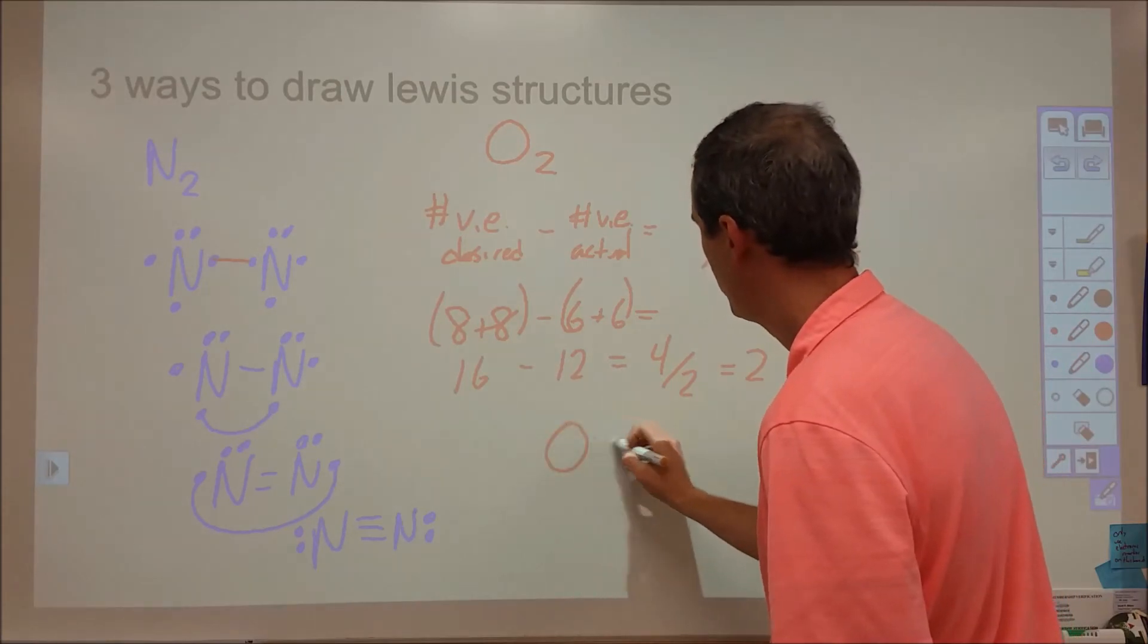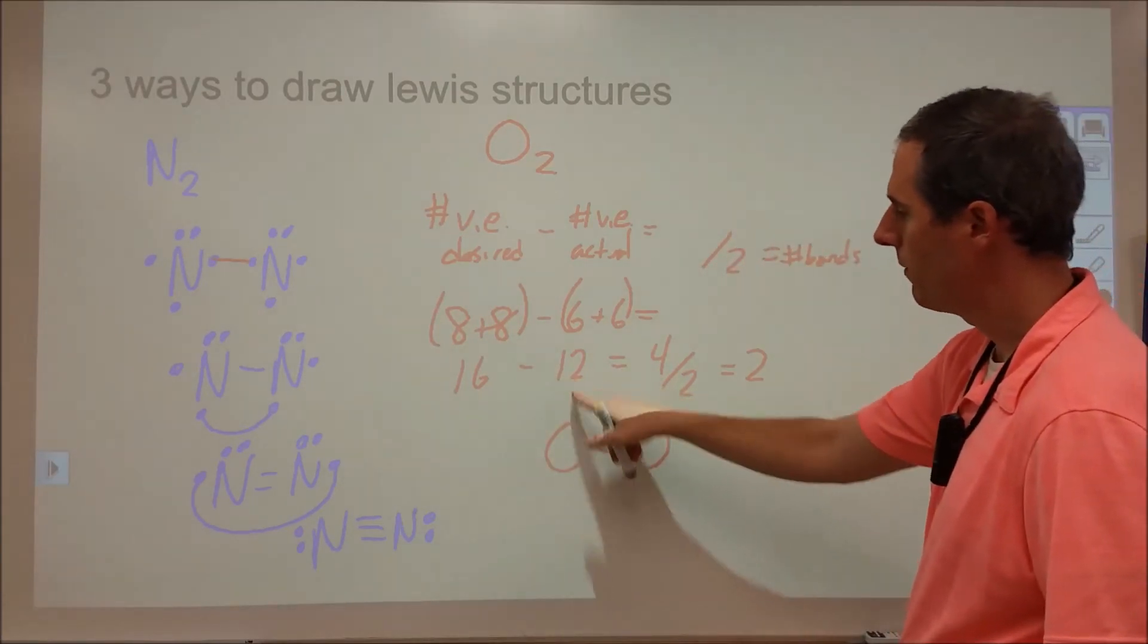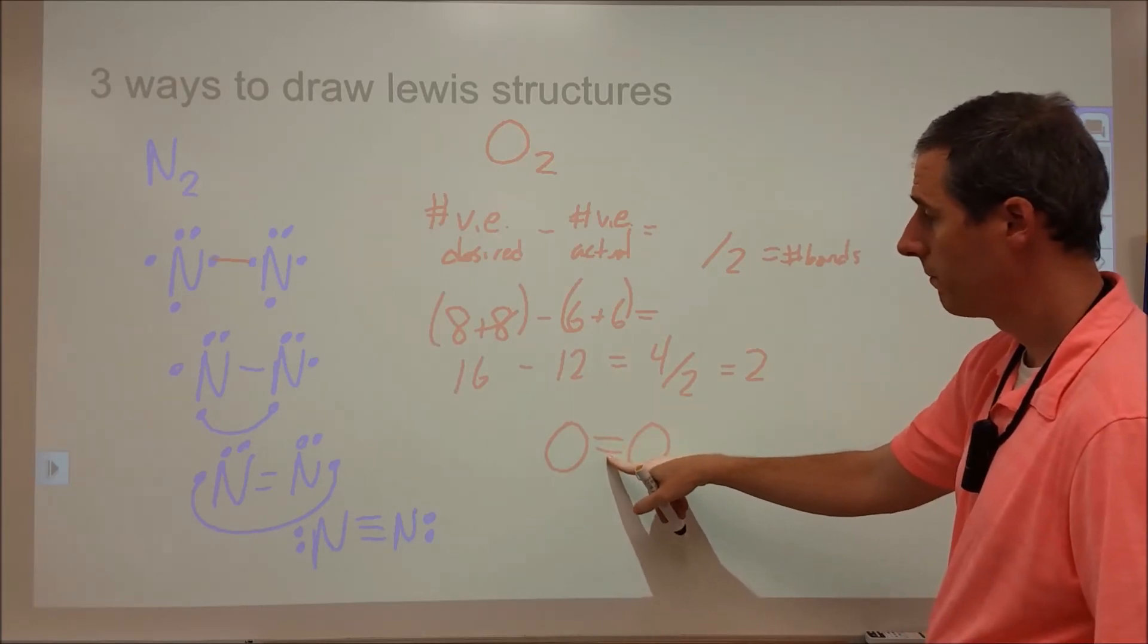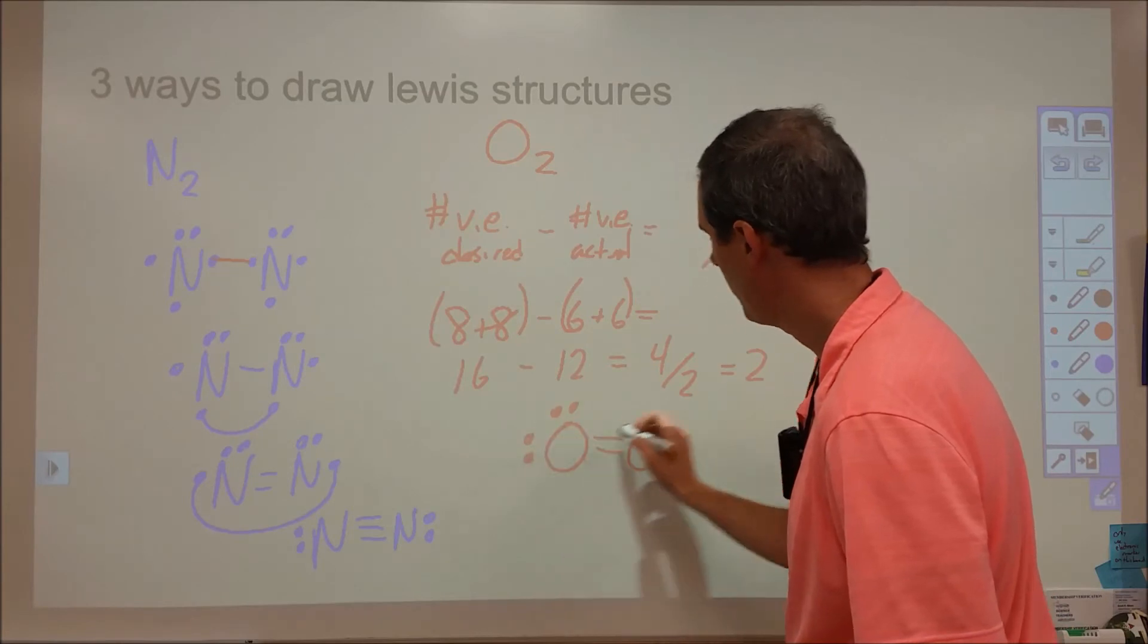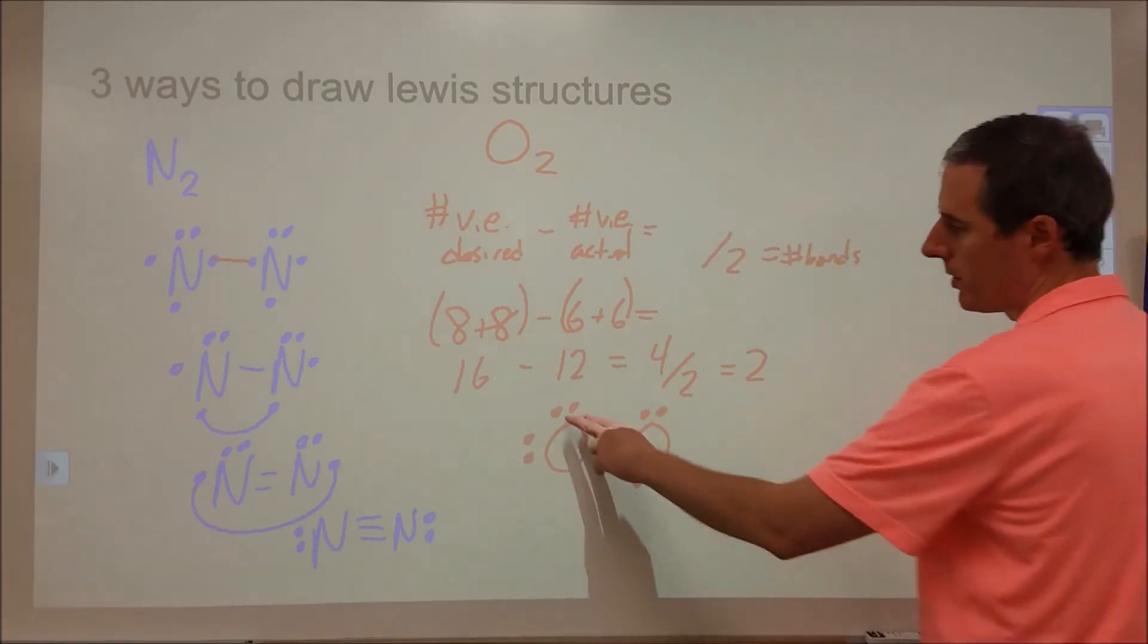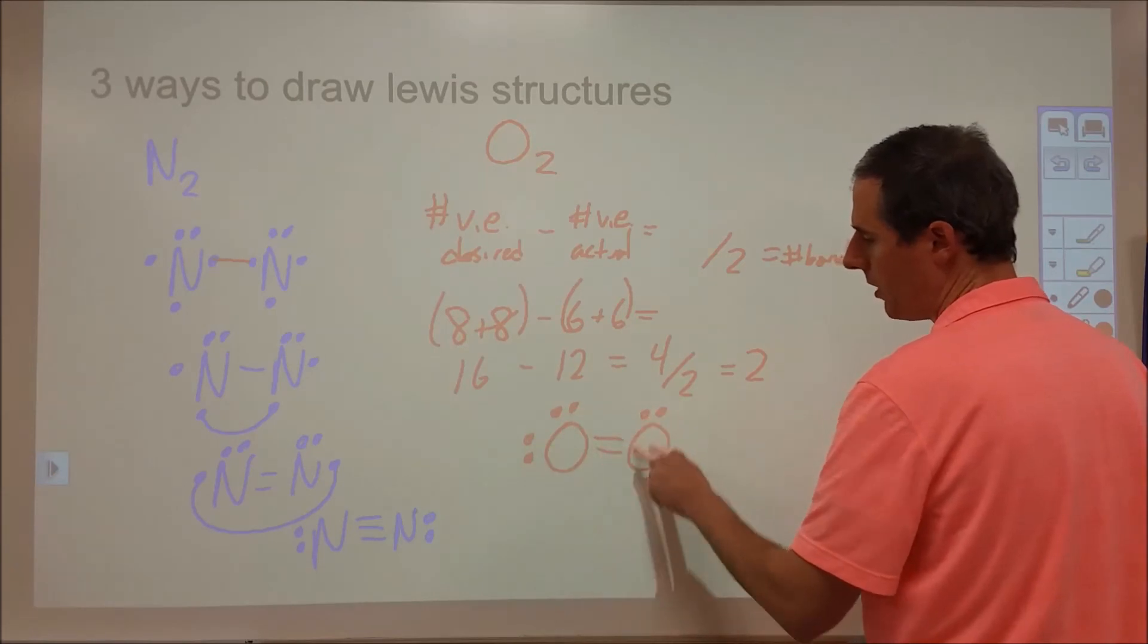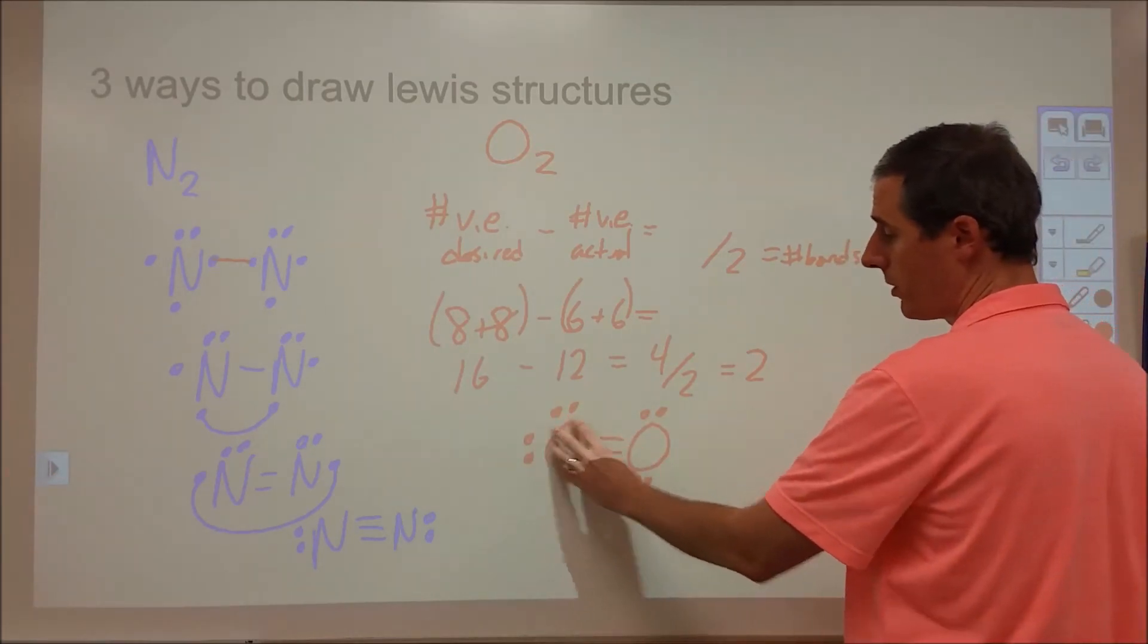So we're going to put O, double bond, O, and then we've got to fill in the rest of our electrons. We have 12 to work with. Here are 4 of them. So we have another 8, so we're going to put 4 on this atom, and 4 on this atom. So that gives us our 2, 4, 6, 8, 10, 12 electrons.